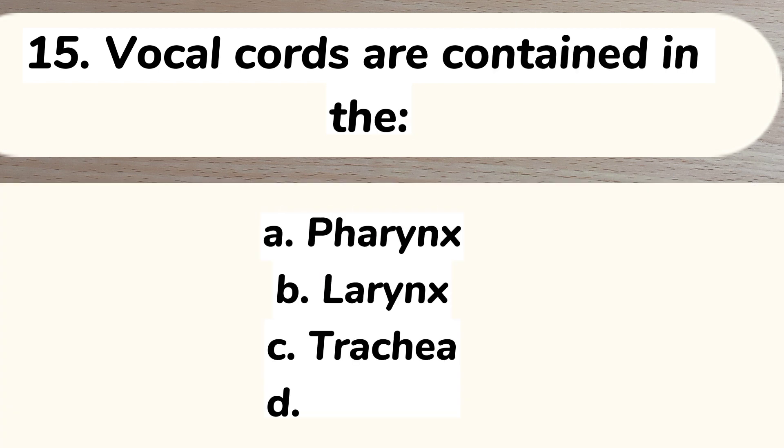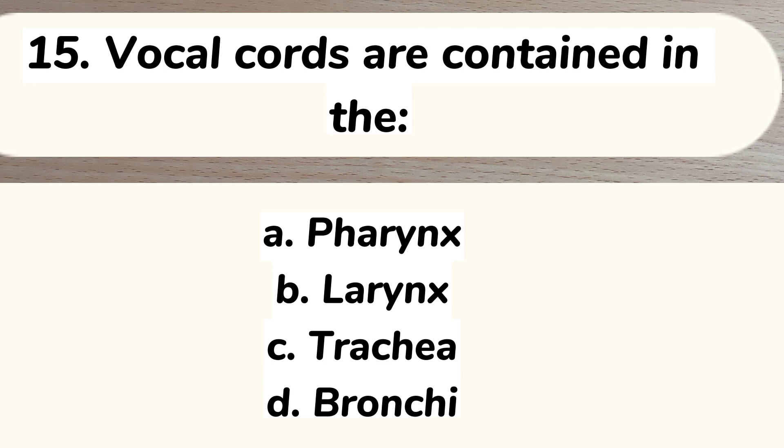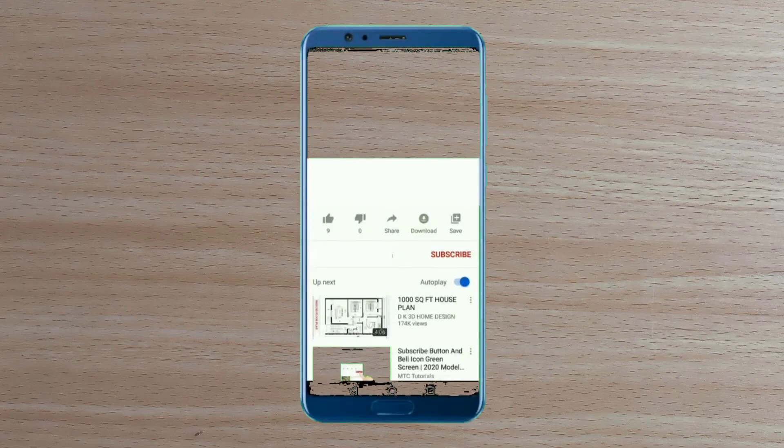Number 15. Vocal cords are contained in: A. Pharynx. B. Larynx. C. Trachea. D. Bronchi. Answer: B. Larynx.